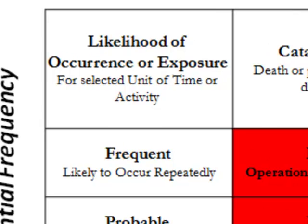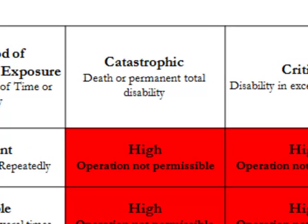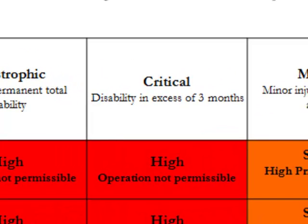Across the top and the other columns, from left to right, we have catastrophic, meaning the situation or the exposure could lead to death or permanent, total disability. Then we have critical, disability in excess of three months.